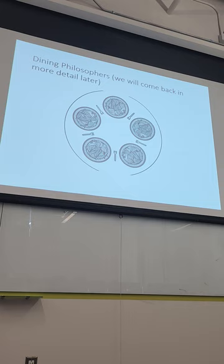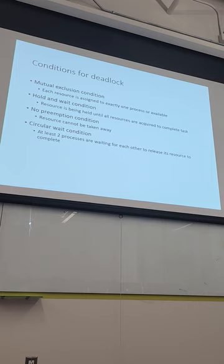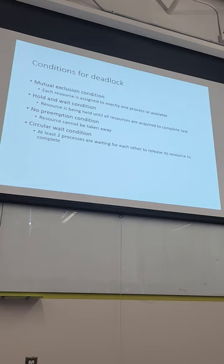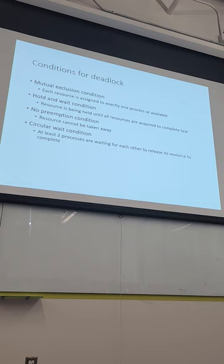What causes deadlock? First, mutual exclusion: each resource can be assigned to exactly one process — you can't have two people grabbing the same fork simultaneously. Second, hold and wait: a process holds one resource and waits for another without releasing what it has. With a greedy mindset — I'm keeping this fork until I get the other — you can end up in deadlock.